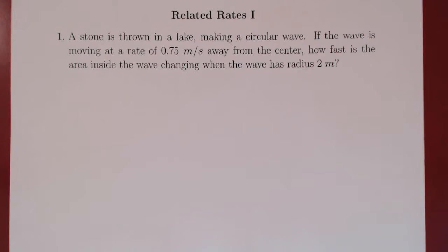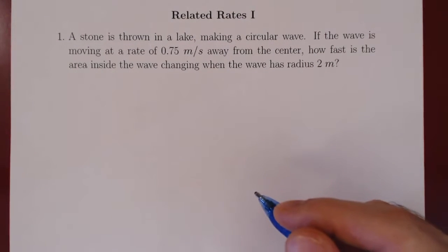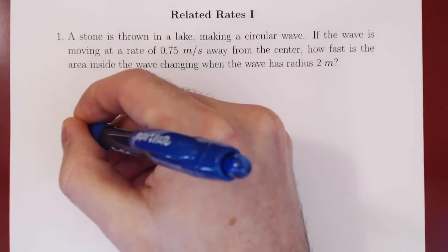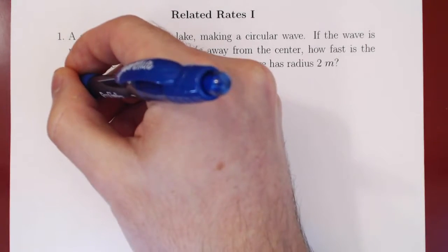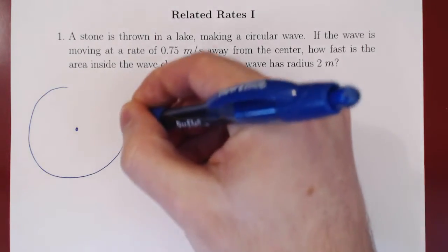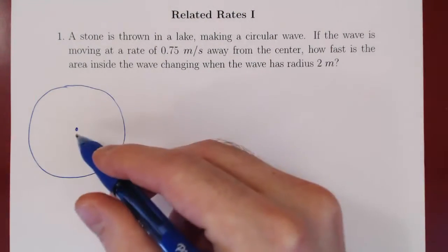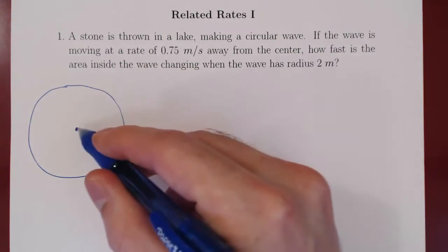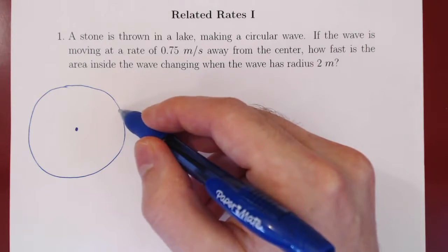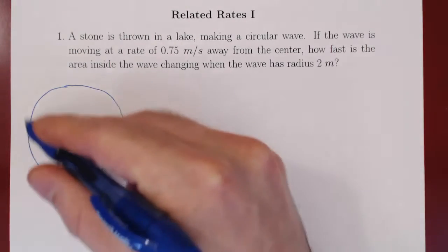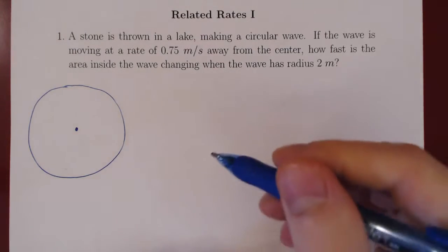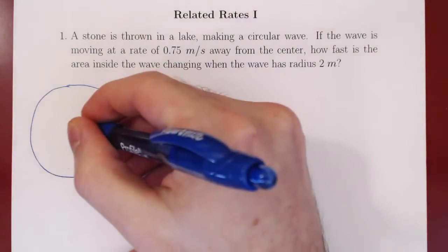The first step is to visualize the situation. We're throwing a stone in the lake and it makes circular waves. Imagine this point being where you throw the stone — as time goes on, the wave gets bigger and bigger. If we focus on the outer wave, two things are changing: the radius keeps growing, so the radius of our circle is changing.